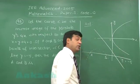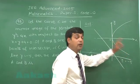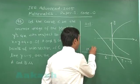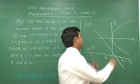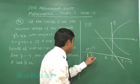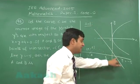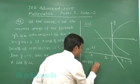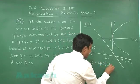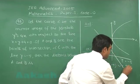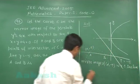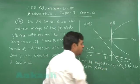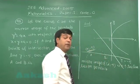We can approach this by taking a general point on the parabola in parametric form (t², 2t) where a = 1 and finding its mirror image. Alternatively, we can take a point (α, -5) on the mirror image curve C and find its image with respect to the line x + y + 4 = 0, which must lie on the original parabola. Let us take the mirror image of the point (α, -5) with respect to the line x + y + 4 = 0.